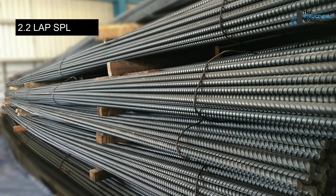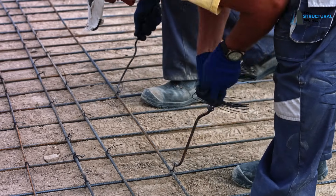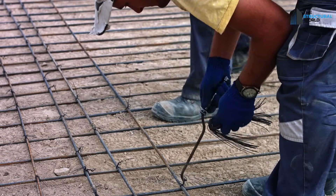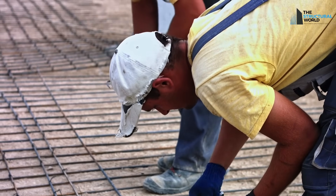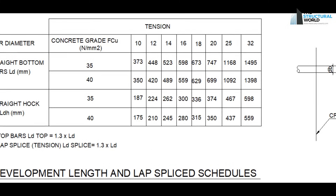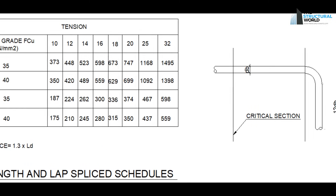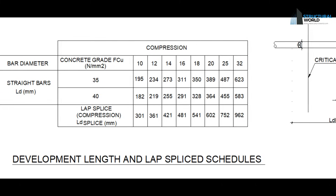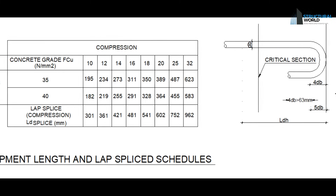2.2 Lap Splicing: Enough development length for the lap splice should also be checked and not taken for granted, to achieve 100% continuity of rebars. The lap splicing can be checked as per the approved drawing, usually mentioned in the general notes; otherwise, you can verify it using the design code and standards.